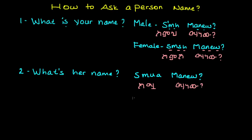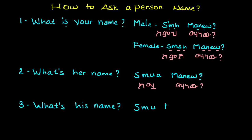The third expression we are going to study is 'what's his name,' or 'what is his name.' In Amharic you say 'Smeh Mano.' Please repeat after me: 'Smeh Mano.' You can write this expression in Amharic letters like this: 'Smeh Mano.'